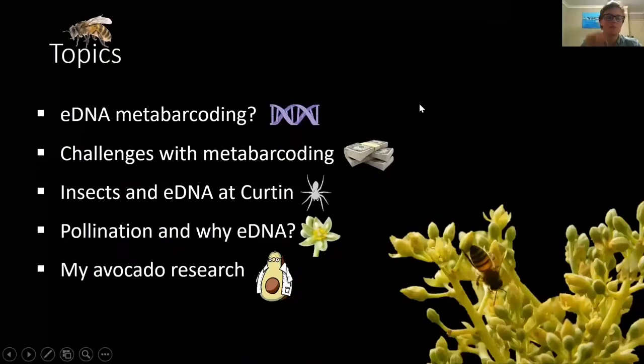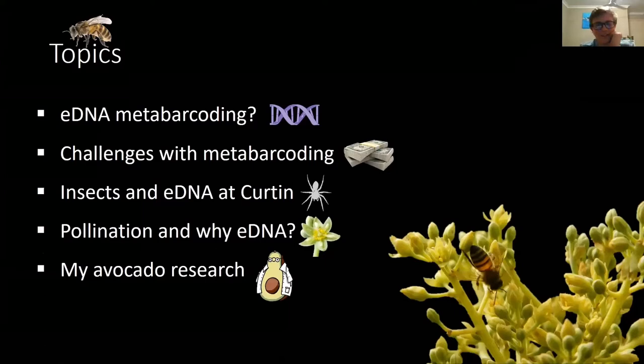Today I'll be talking about eDNA metabarcoding — what it is, the challenges with metabarcoding as a technique, since all DNA technologies have their quirks and eDNA is no different. I'll also cover what research is being broadly done at Curtin University with insects, then jump into pollination and why eDNA might be a useful tool for measuring taxonomic diversity, and lastly my avocado research.